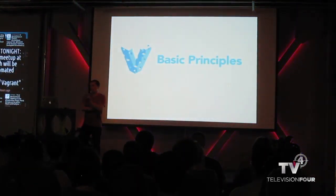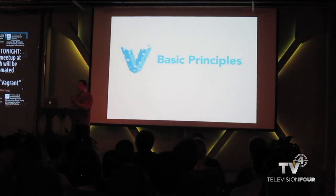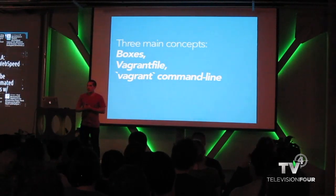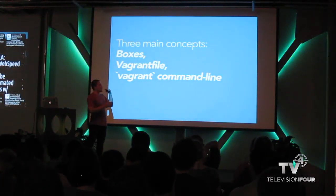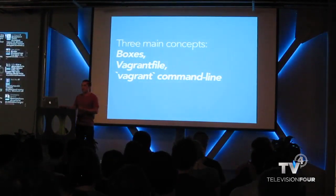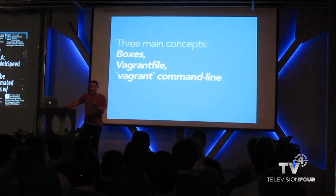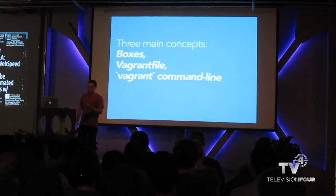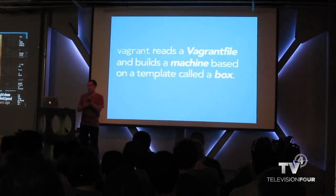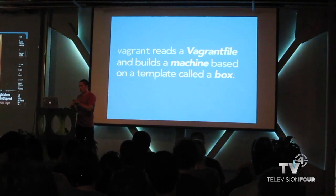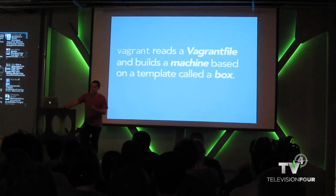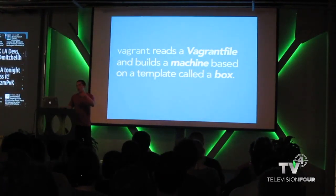Let's cover the basic principles of Vagrant — the three main concepts or components you need to work with. These are pretty much the only terms Vagrant introduces: boxes, a Vagrantfile, and the Vagrant command line tool. In one sentence: the Vagrant command line tool reads a Vagrantfile and builds a machine based upon a template called a box.